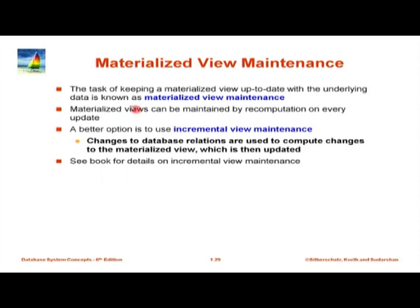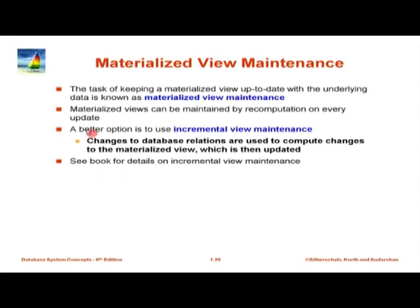One way to maintain a materialized view is to recompute it on every update — that is horribly expensive. Another way is to recompute it periodically, which is acceptable for some applications where seeing yesterday's statistics is fine. A better option in general is incremental view maintenance: collect the changes that happened to the database, use them to compute the changes to the view, and then update the view.